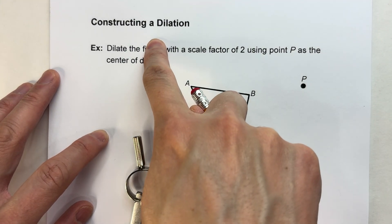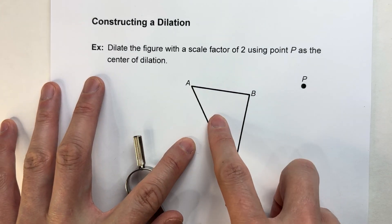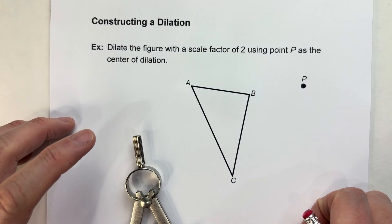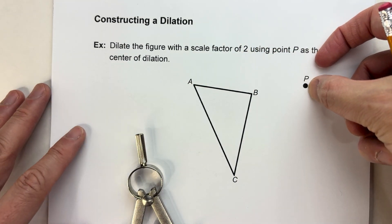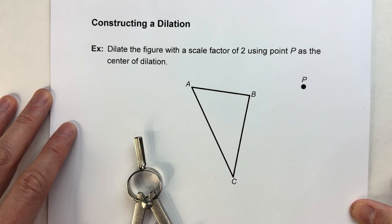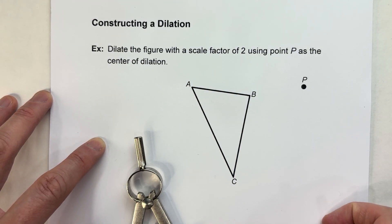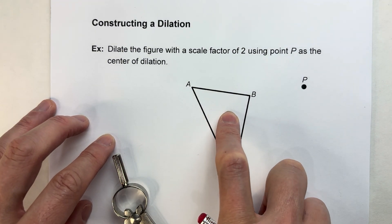So today we're constructing a dilation. In case you don't know, a dilation is when we take a shape and a point and we either stretch it away from that point to make it bigger or we pull it towards the point to make it smaller. Dilations keep the same shape but just change the size, so we end up making similar figures. So let's do a couple of examples.